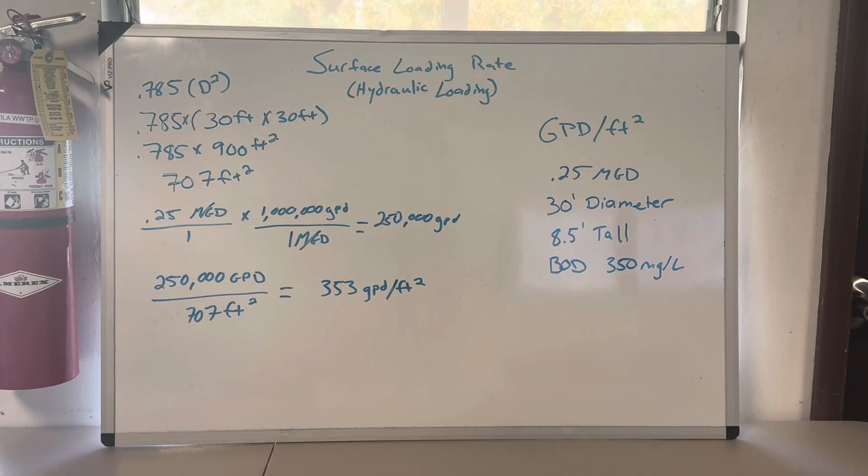Stick around to the end of the video and I'm going to tell you a nuanced math problem that you're going to need to know for your grade two. But just bear with me and I'll talk about that when we're done with this math. So surface loading rate is gallons per day per square foot. Here we're given a flow of 0.25 MGD flowing through a 30 foot diameter clarifier that's 8.5 feet tall, and we've got 350 milligrams per liter.